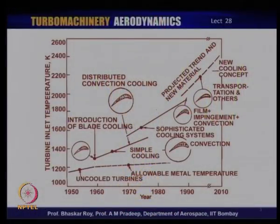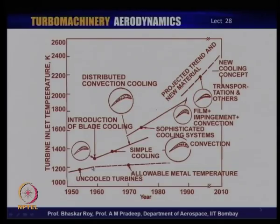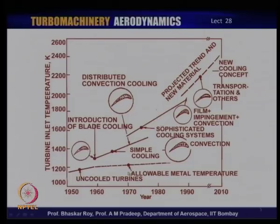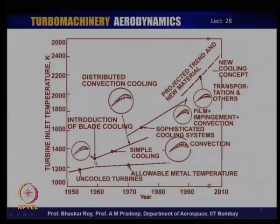Looking at the graph available in many books, in the early era of the 1950s, most blades were actually uncooled blades that could take up to about 1000 degrees centigrade. From there onwards, if aspiring towards higher turbine entry temperature, you have to resort to some kind of cooling technology. A simple cooling technology was used in which certain cold air was passed through the blade, providing about 25–30 degrees of cooling to begin with, which was sufficient to raise the temperature by about 50 degrees. Slowly the temperature started rising as the cooling technology improved.